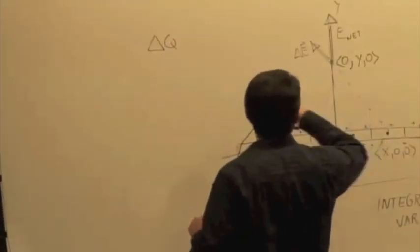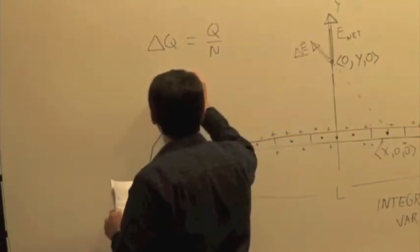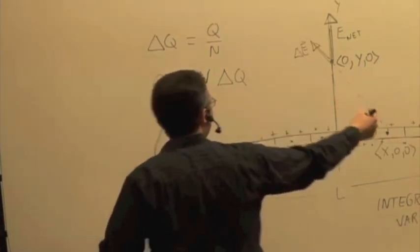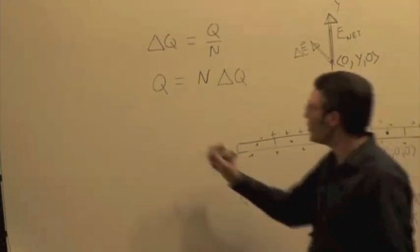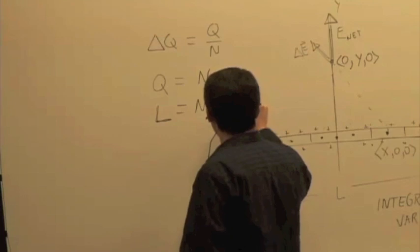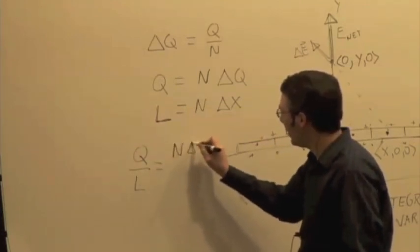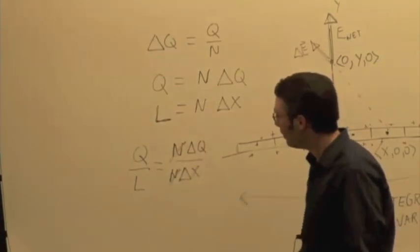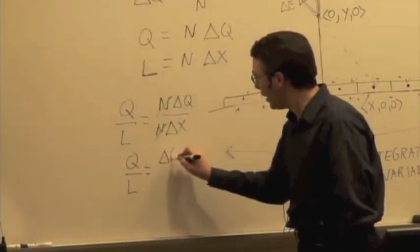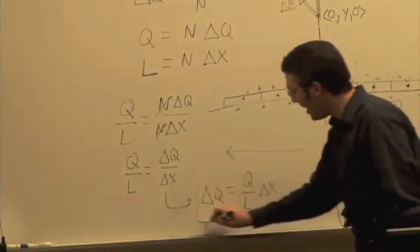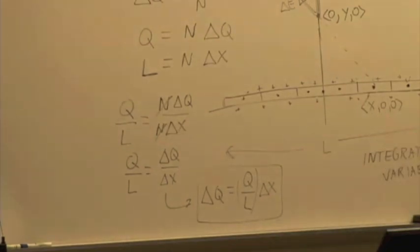We said delta Q is equal to Q over N, so the total charge equals total number of segments times delta Q. We also said delta x is L over N, so the total length equals the number of segments times delta x. If I divide those two expressions, I have Q over L equals delta Q over delta x, so the charge per unit length equals delta Q over delta x. Solving for delta Q: delta Q equals Q over L times delta x. Now the charge per segment is in terms of constants and the integration variable.